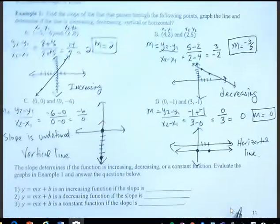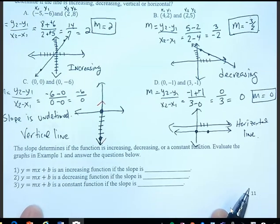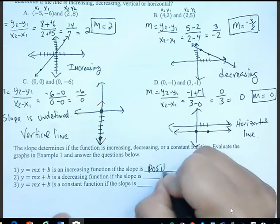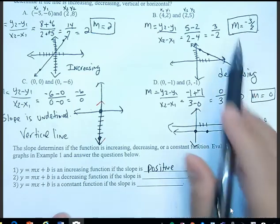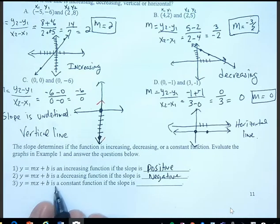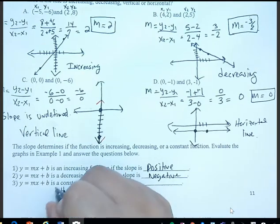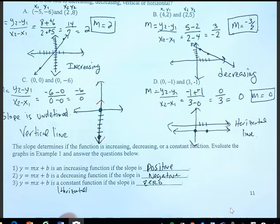To summarize these four examples: slope determines if the function is increasing, decreasing, or constant. y equals mx plus b is an increasing function if the slope is positive — that was the first graph. It's decreasing if the slope is negative. And y equals mx plus b is constant, meaning a horizontal line, when the slope is 0.